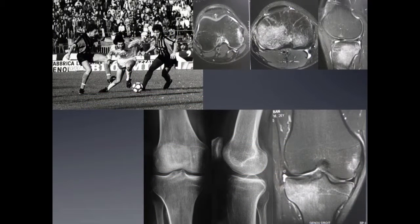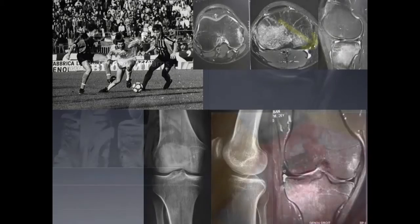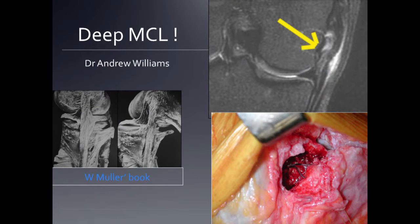There is one injury that is particularly frequent in soccer players — a lesion of the deep MCL. In this case, it can lead to consideration of surgery. Andy Williams highlighted that the MCL is a very complex structure with different layers, and it is the upper part of the MCL that is frequently injured. In all other cases, a conservative treatment is mainly proposed to the player.